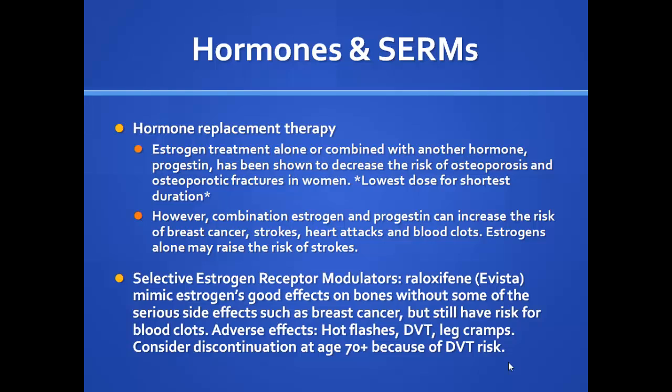Estrogen and hormone replacement therapy — typically estrogen plus progesterone — decrease the risk of bone loss and subsequent fractures in women going through menopause. The goal is the lowest dose for the shortest time possible because of associated risks: breast cancer, blood clots, cardiovascular disease, and stroke. Thinking on HRT has evolved over time, with combination therapy now more common than estrogen alone.